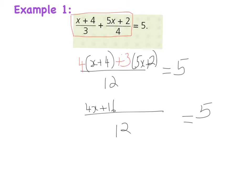Then 3 times 5x gives me plus 15x, and the last term: 3 multiplied by 2 gives me plus 6.